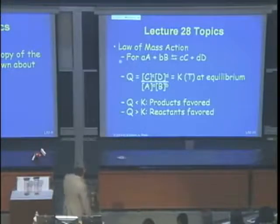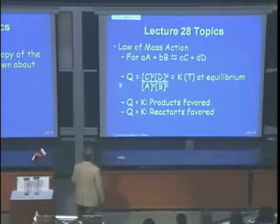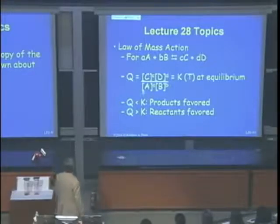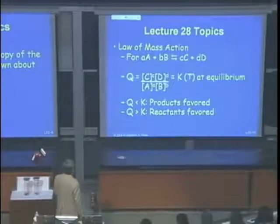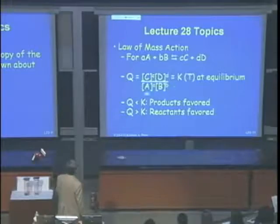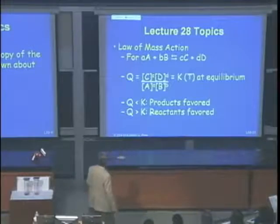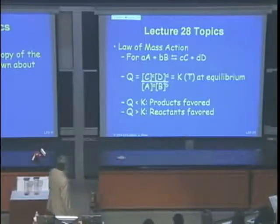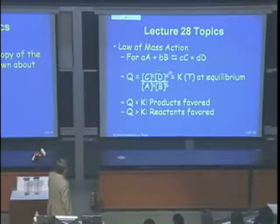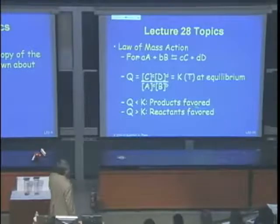Lecture 28 covers the law of mass action and Q vs. K. If Q < K, products are favored and the reaction proceeds forward. If Q > K, there are too many products and the reaction shifts left — reactants are favored.